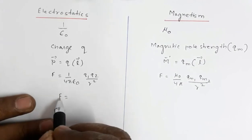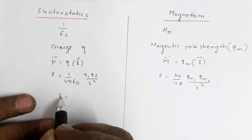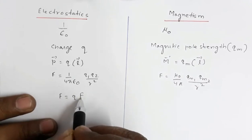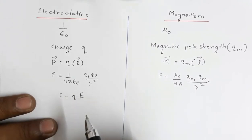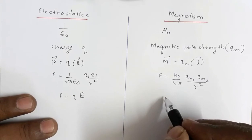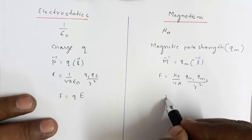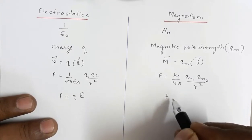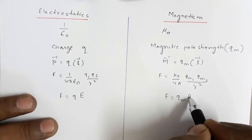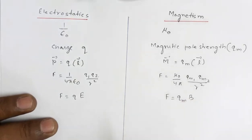The force due to the electric field is F = Q × E, where Q is the charge and E is the electric field. The analogous expression in magnetism is F = Q_M × B, where the pole strength is multiplied by the magnetic field B.